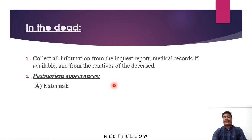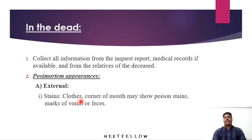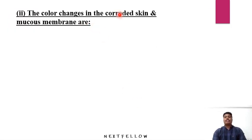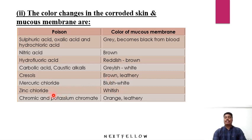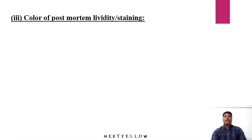Post-mortem examination begins with external signs: stains on clothes or corners of the mouth may show poison stains, marks of vomit, or feces. Color changes in corroded skin and mucous membranes are important. In sulfuric acid, oxalic acid, and hydrochloric acid poisoning, the mucous membrane becomes gray then black. In nitric acid it becomes brown; in hydrofluoric acid, reddish brown; in carbolic acid, grayish white; in cresols, brown or leathery; in mercury chloride, bluish white; in zinc chloride, whitish; and in chromium and potassium chromate, orange and leathery.